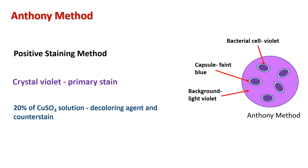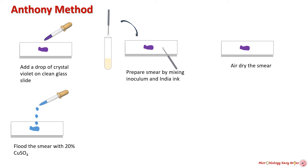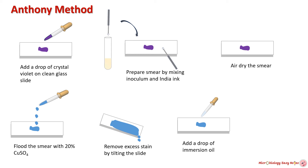After staining: the bacterial cell appears violet, the background appears light violet, and the capsule appears as a faint blue halo. Procedure of Anthony's method: take a clean, sterilized or grease-free slide and add a drop of crystal violet to the center. Prepare a smear by taking an inoculum from the bacterial culture, mix with the crystal violet, and allow the smear to air dry. Flood with 20 percent copper sulfate solution for at least 30 seconds, then remove extra stain by tilting the slide, add immersion oil, and observe under the microscope.